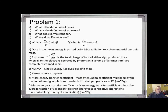The mass energy absorption coefficient, mu_EN over rho, is essentially the mass energy transfer coefficient minus the average fraction of secondary electron energy lost by radiative interactions, which is typically bremsstrahlung but also in-flight annihilation. All have the same units: cm² per gram.